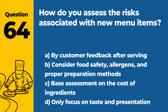Question 64. How do you assess the risks associated with new menu items? a. Await customer feedback after serving. b. Consider food safety, allergens, and proper preparation methods. c. Base assessment on the cost of ingredients. d. Only focus on taste and presentation. Answer b. Consider food safety, allergens, and proper preparation methods. Assessing the risks associated with new menu items involves considering food safety, potential allergens, and ensuring proper preparation methods are in place.